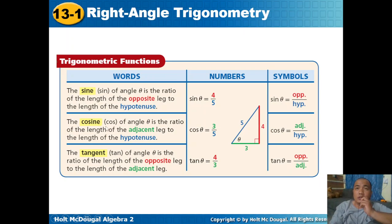Cosine is CAH — adjacent side over hypotenuse. The adjacent side is 3 and the hypotenuse is 5, so cosine theta equals 3 over 5. For tangent, TOA — opposite over adjacent. The opposite side is 4 and the adjacent side is 3, so tangent theta equals 4 over 3.